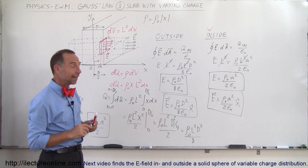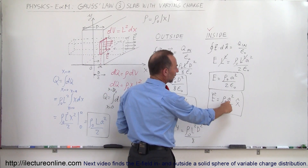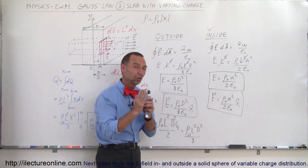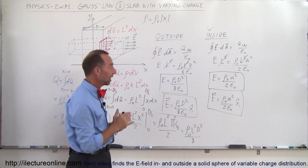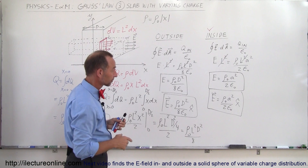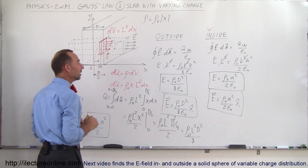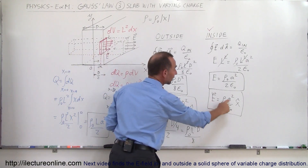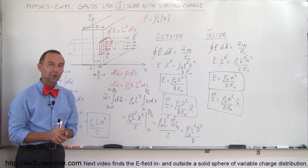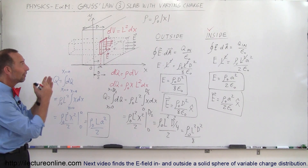We can verify: if A = d/2, the two expressions should converge. Plugging d/2 into the inside formula gives ρ₀ d²/(8ε₀), which matches the outside result. So both answers agree at the edge of the slab. Also, if A = 0, the electric field equals zero at the center — which is correct. We've checked both limiting cases and get the correct answer in both, so this is probably right. That's how we find the electric field inside and outside a slab with varying charge density.